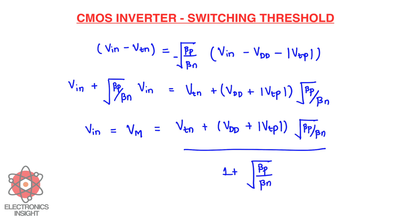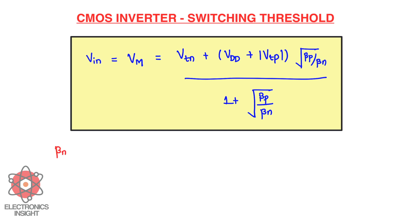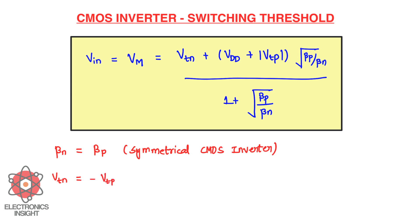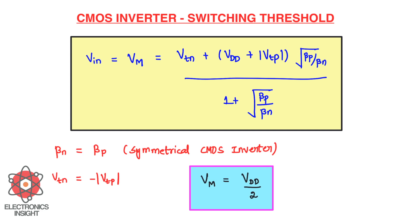For a symmetrical CMOS inverter design where βN equals βP, and substituting VTN equal to −|VTP|, the equation reduces to VM = VDD/2. When VTN equals −|VTP|, those two terms cancel; when βP equals βN, all ratio terms become one, giving VDD/(1+1) = VDD/2 for a symmetrical CMOS inverter design.